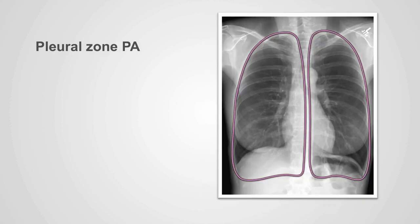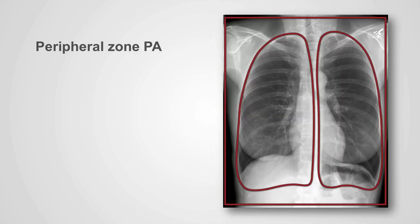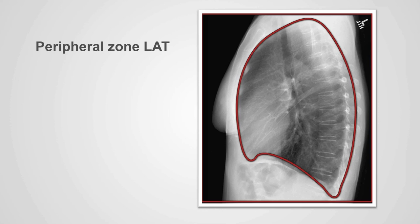Because of the close relationship of the pleura to the lungs, the pleural zone roughly corresponds to the lung zone on both the PA and lateral x-rays. The peripheral zone is identified on the PA film as everything that lies lateral to the pleural zone. Similarly on the lateral view, the peripheral zone represents all of the structures that lie lateral to the pleural edge.